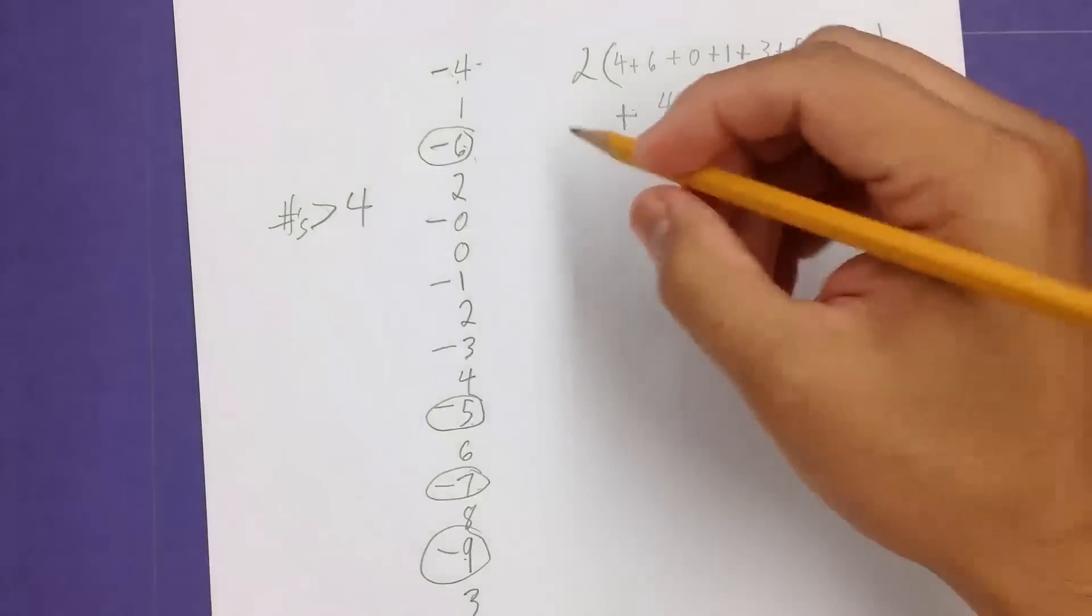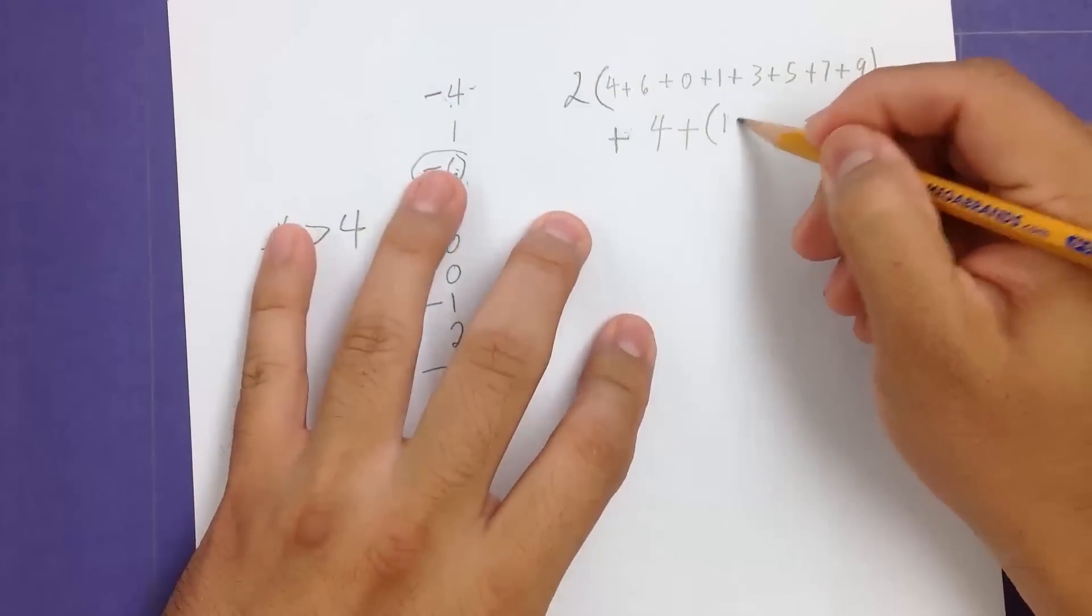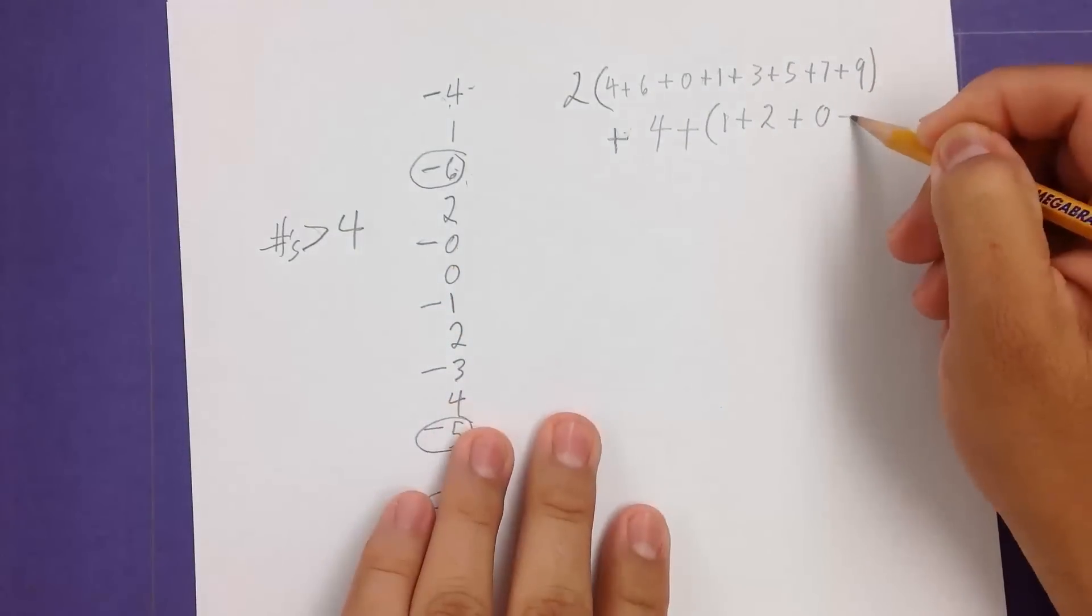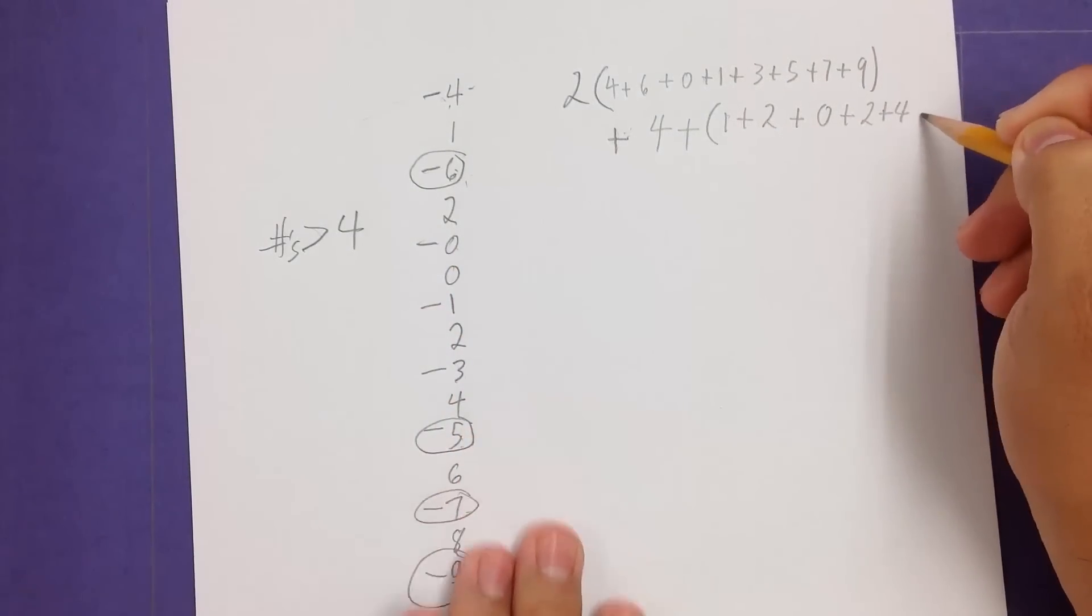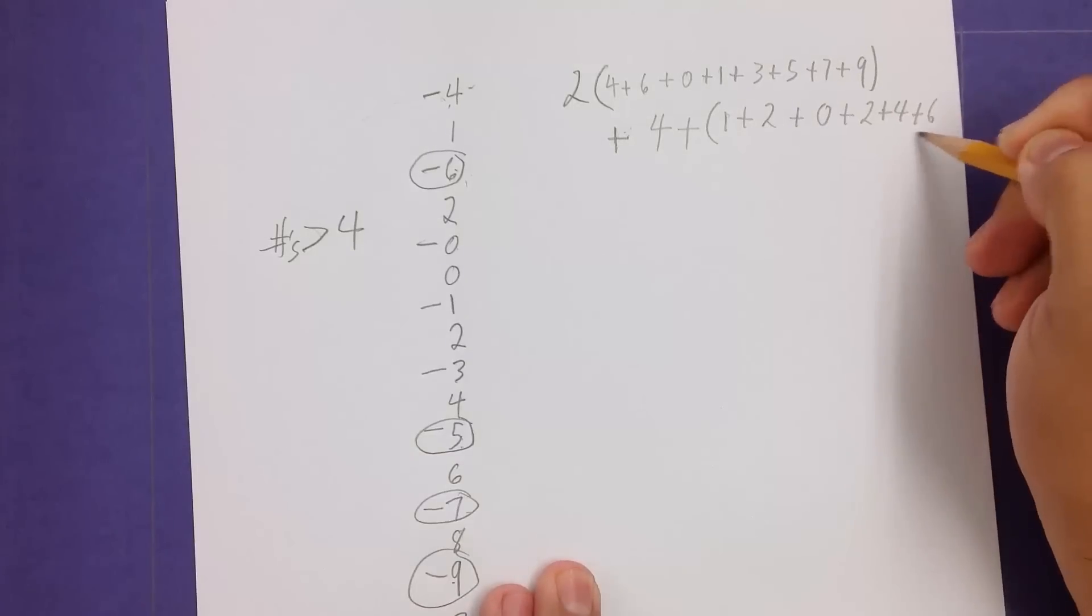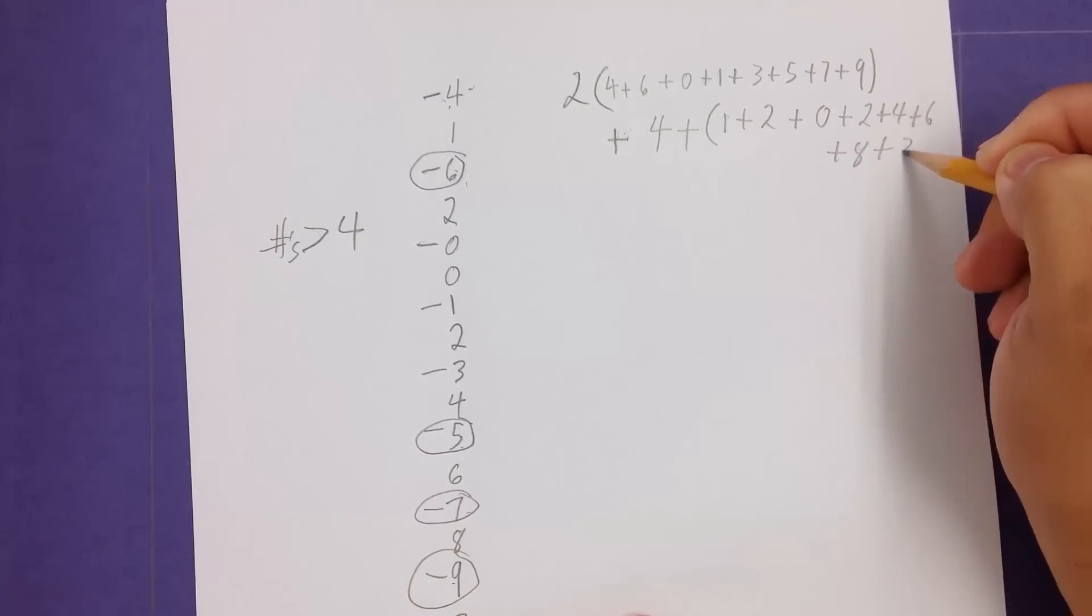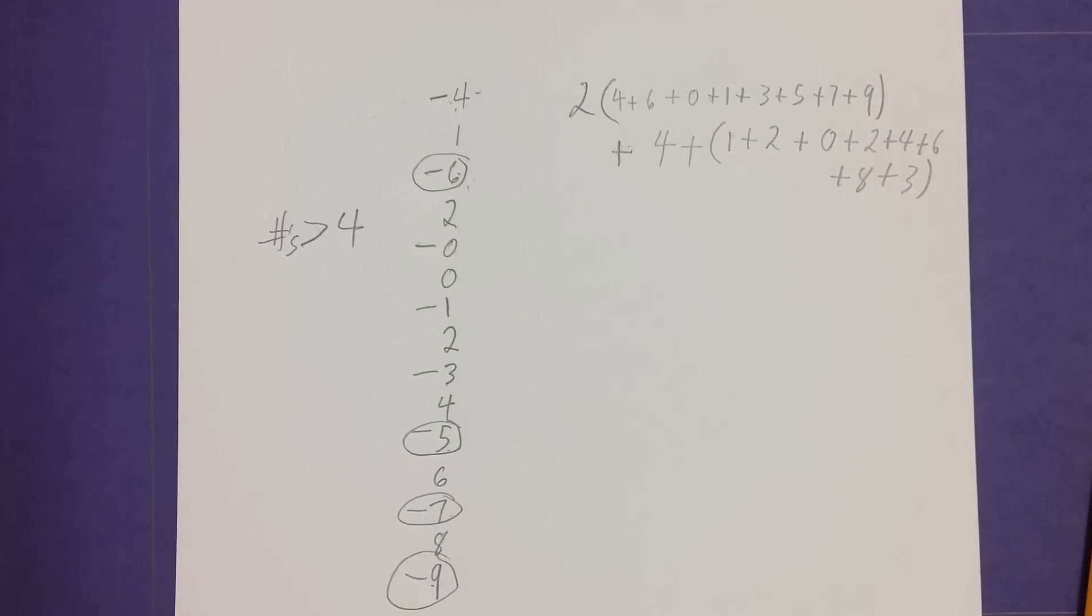Now, finally, we add everything that we haven't even worked with. So all the even numbers, we go ahead and add. So 1 plus 2 plus 0 plus 2 plus 4 plus 6 plus 8 plus 3. We add that all together. So let's see.